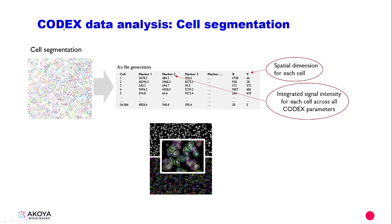With Codex Data Analysis and MAV, all of the data come into MAV post-segmentation. The segmentation actually occurs in the Codex processor and is read into MAV. The segmentation file includes X and Y spatial coordinates so we know where each cell is inside the tissue, and it also has columns for each marker or antibody, so we have all the cytometric information about each cell and their spatial location.